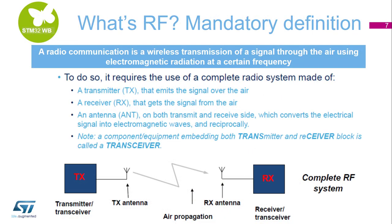Let's start with the mandatory definition of RF. A radio communication is a wireless transmission of a signal through the air using electromagnetic radiation at a certain frequency. The complete radio system is made of a transmitter that emits the signal, a receiver that gets the signal, and an antenna on both sides, which converts the electrical signal into electromagnetic waves and vice versa. A component embedding both transmitter and receiver is called a transceiver.